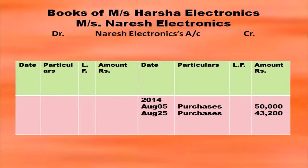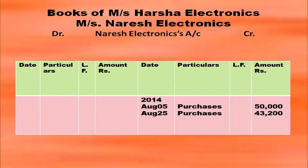You have already written the names of the suppliers. So how will you post after the entries in the purchases book? In the purchases book you have written Naresh Electronics — Harsha Electronics purchased materials from them. So you have to post in the Naresh Electronics account. Messrs. Naresh Electronics' account will be opened and on the credit side you will post by purchases with the date. On August 5th purchases amounting to 50,000 and on August 25th purchases of rupees 43,200.